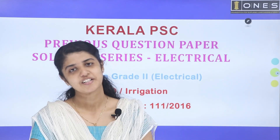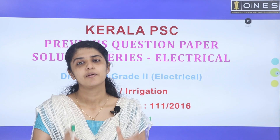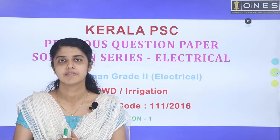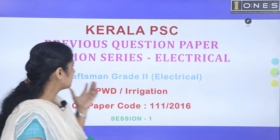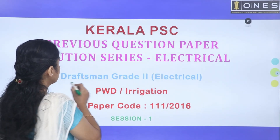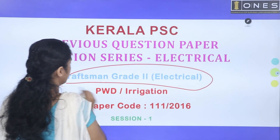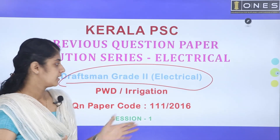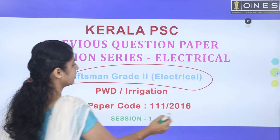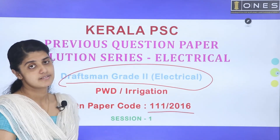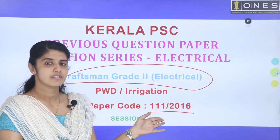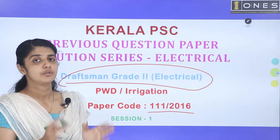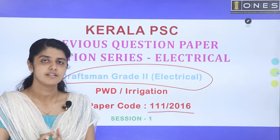Hi everyone. Welcome to OneSquatching Electrical Previous Question Solution Series. We are doing the Drossman Grade 2 Electrical PwD variation, question paper code 111 bar 2015, in 2016. What is Drossman Grade 2 Electrical PwD?